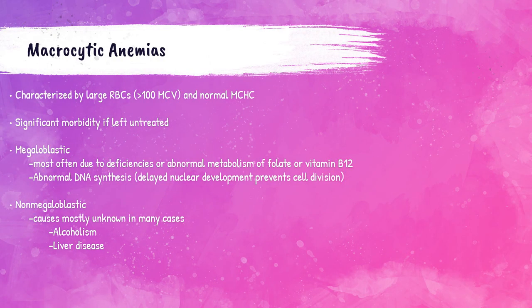If you've not already checked out my lectures on erythrocytes and red cell morphology, you will want to check out those videos before you continue with this one. This lecture is about megaloblastic and non-megaloblastic anemias, which are types of what we call macrocytic anemias.